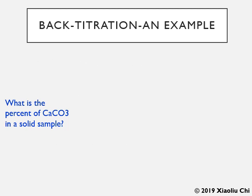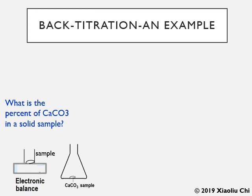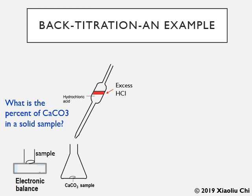Let's take calcium carbonate as an example — a common ingredient in commercial antacids. Assume we have a solid sample containing calcium carbonate. We first weigh a certain amount of the solid sample and transfer it into an Erlenmeyer flask. Instead of directly titrating the calcium carbonate with an equivalent amount of hydrochloric acid, which is very difficult for a solid sample, we add an excess amount of hydrochloric acid.